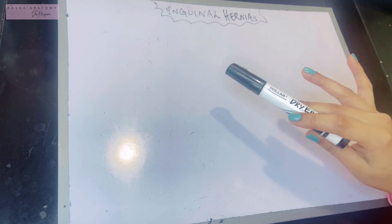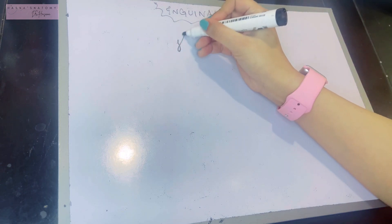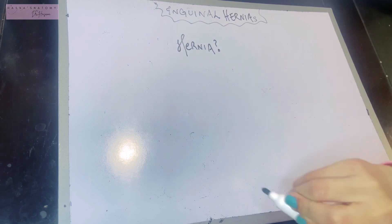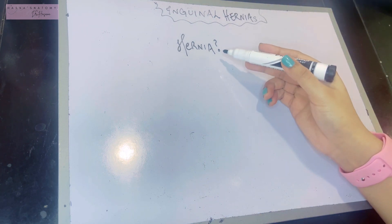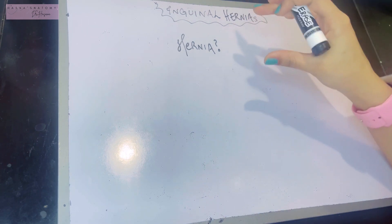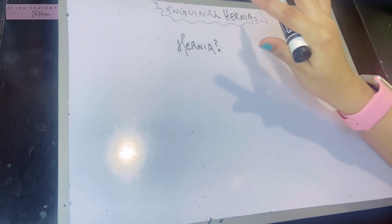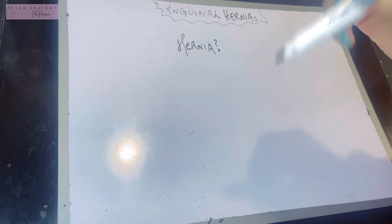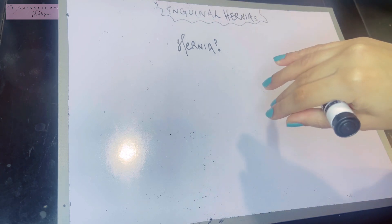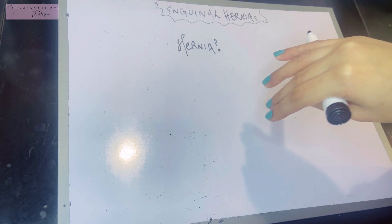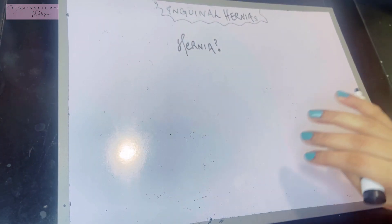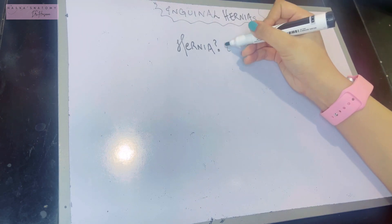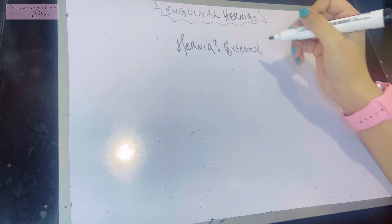What is a hernia exactly? Hernias are basically protrusions of abdominal contents into regions that they do not belong to. For instance, a loop of intestine entering your inguinal canal, or entering your thigh, or a loop of bowel entering the umbilicus area — these are hernias, and they are mostly known as external hernias.